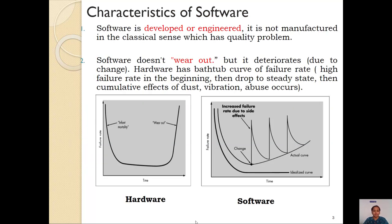Now let us see the characteristics of software. Software is characterized by some features. The first one says that software is developed or engineered — it is not manufactured in the classical sense, which has quality problems. We are all aware about hardware, which is manufactured. For example, a car, a truck, a bus, a table, or a chair — all these things we can physically see and touch and they are manufactured. Whereas software is something which we cannot see or touch. It gets installed on your computer or laptop and then you can make use of it. So software is said to be developed or engineered, not manufactured.